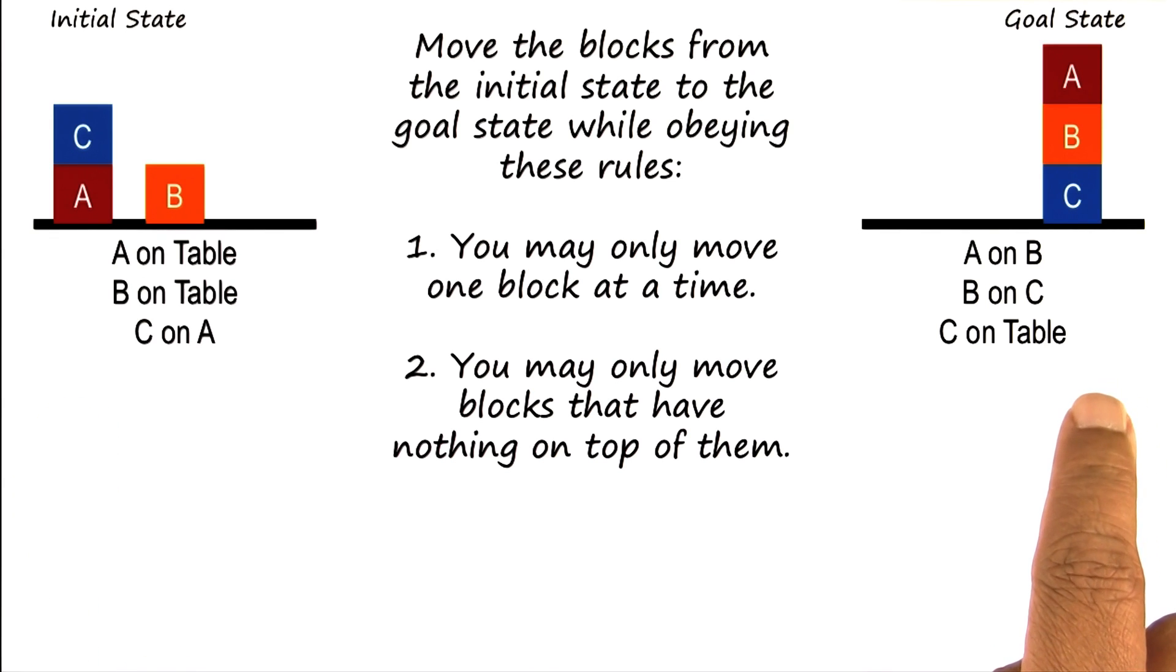And you want to move these blocks to the goal state and this configuration, so that C is on table, B is on C, A is on B. The problem looks very simple, doesn't it?